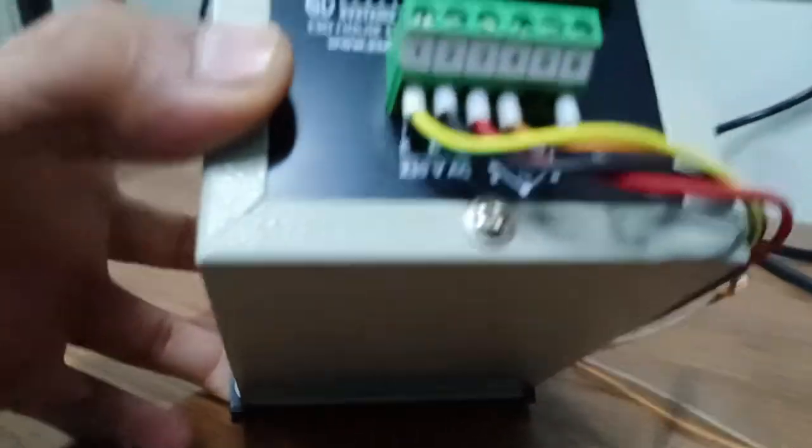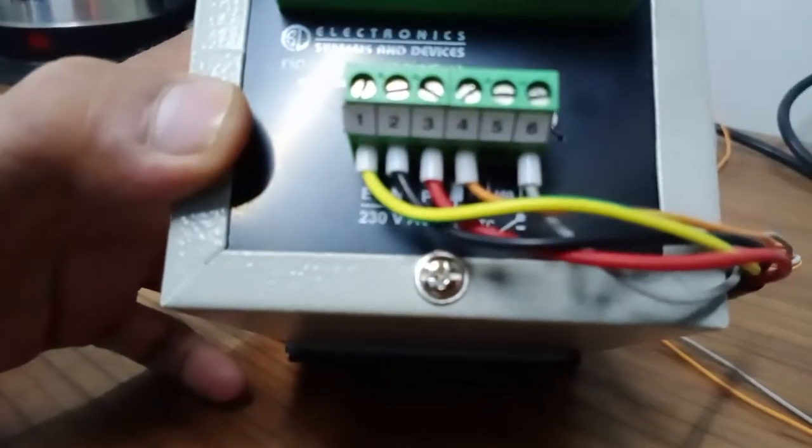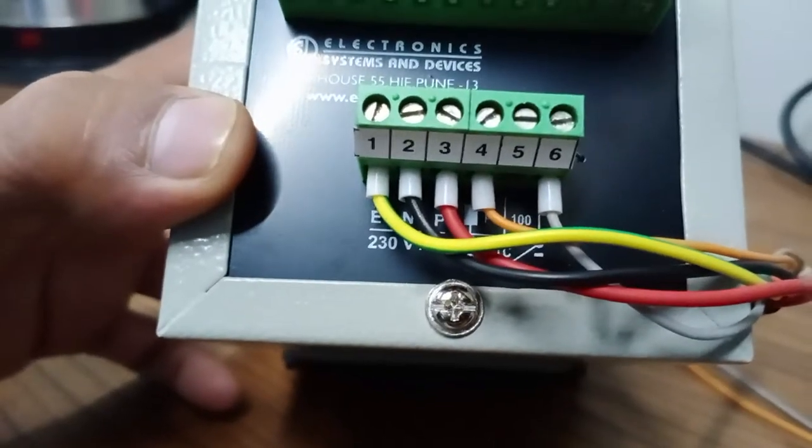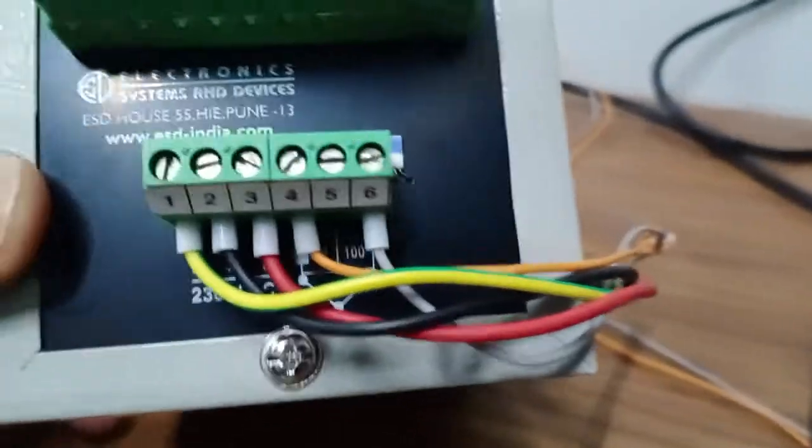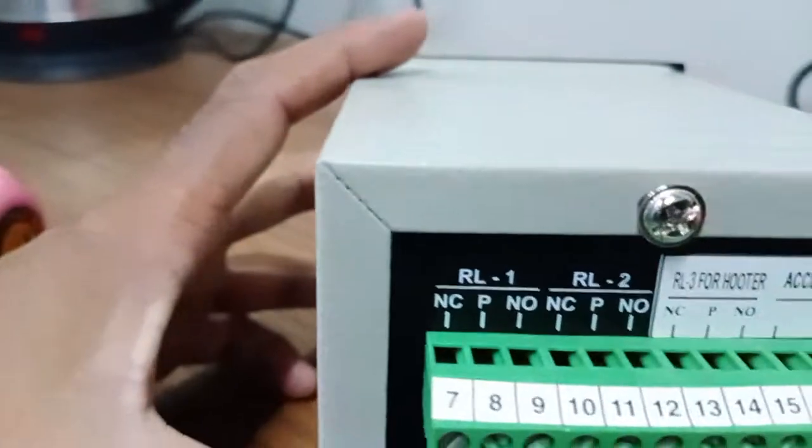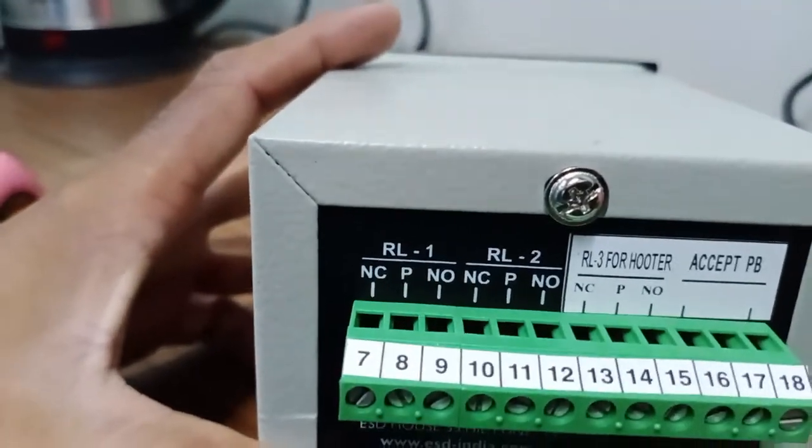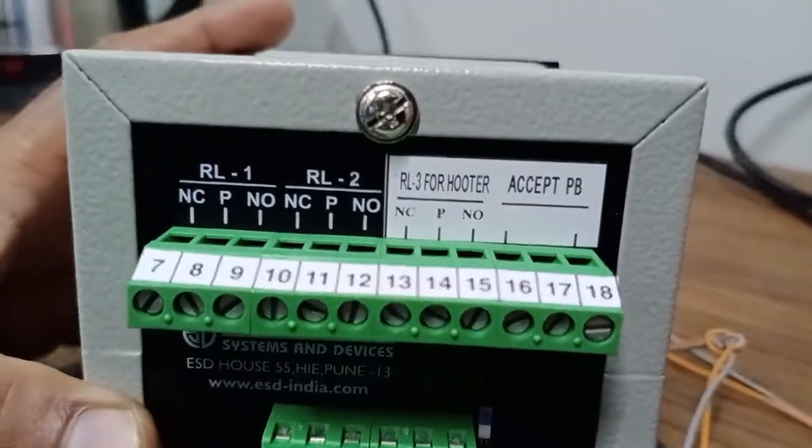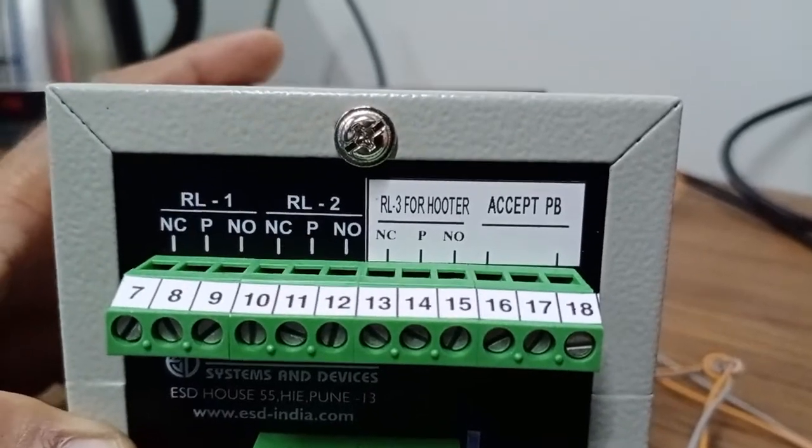Here the first is the power connection. Then is the sensor. 4 and 6 we have connected the simulator input. And this is the relay 1 relay 2. NC pole NO. NC pole NO. The third is for the timer relay for the hooter.